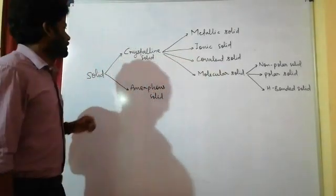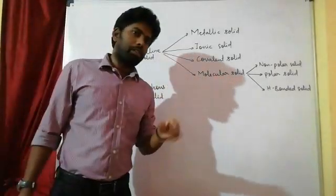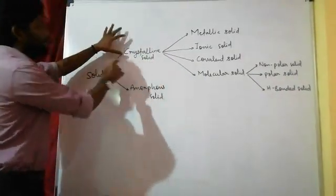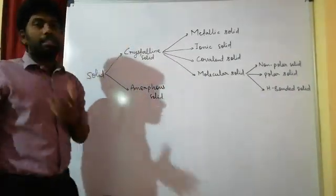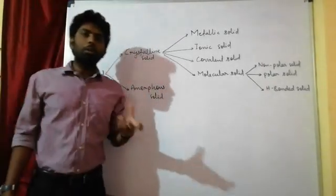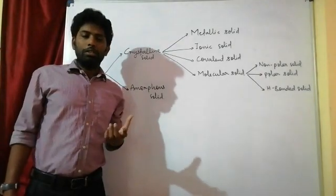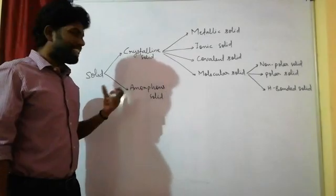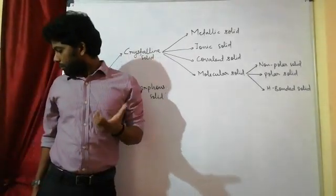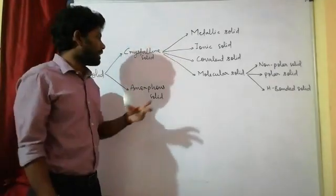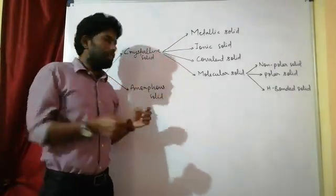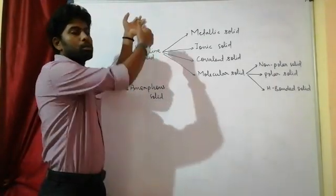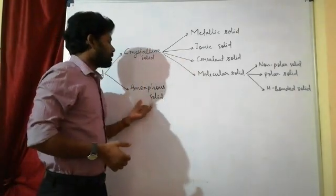Now coming to solid classification. Solids are divided into two categories: crystalline solids and amorphous solids. Crystalline solids include iron and gold. Amorphous solids are different — for example, plastic can be compressed and rubber can be compressed. These are solids, but they don't show all the basic properties, which is why they form a separate category.